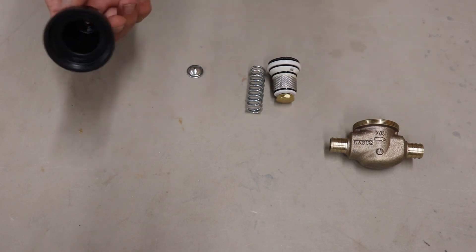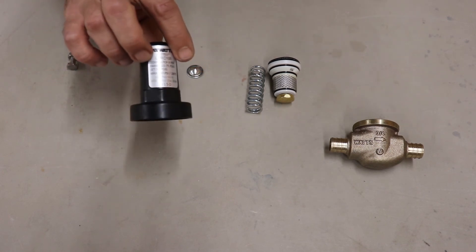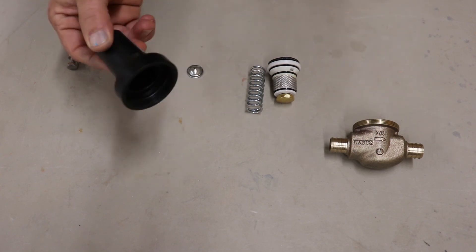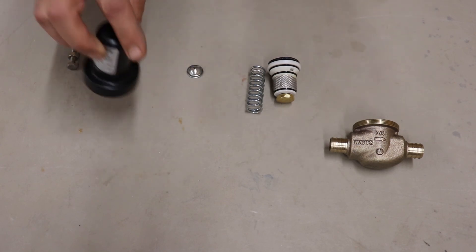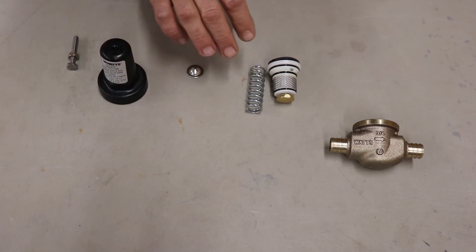Now this next part is just simply a cap, it's your spring cover. It does have your rating sticker on the front of it but it's just a plastic cap that's going to cover your spring assembly.